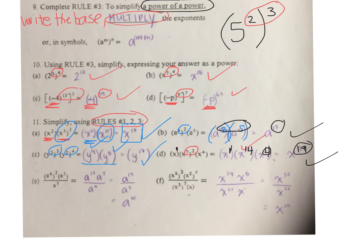For questions E and F, we have a numerator and a denominator — always simplify each of them before the final step, which is division. Look here: 6 times 2 is 12. A to the power of 12 times A to the power of 5 divided by A to the power of 7. Simplify the numerator: 12 plus 5 is 17. Then divide by 7 — subtract: 17 take away 7 is 10.